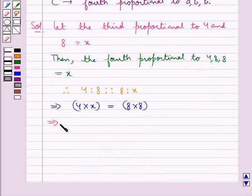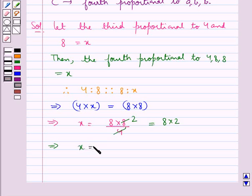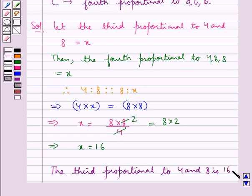This gives us X equals 8 multiplied by 8 divided by 4. Since 4 times 2 is 8, this equals 8 times 2, which means X equals 16. Thus, the third proportional to 4 and 8 is 16.